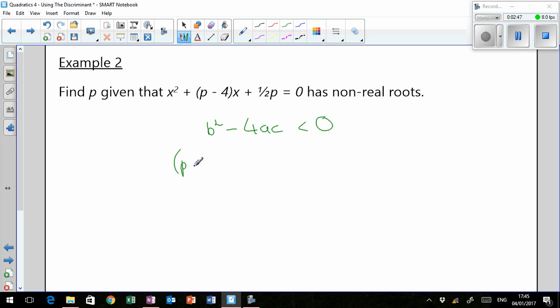So, B, in this case, is (P - 4) all squared. Minus 4 times 1 times a half P for C. Less than zero. And that quadratic gives you P² - 8P + 16 when you square it. And that's going to be minus 2P. So, P² - 10P + 16.